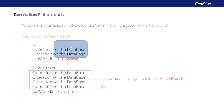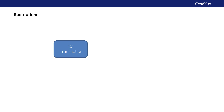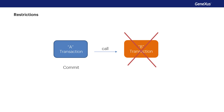Now let's look at some important restrictions in relation to this issue. In web environments, each transaction can only commit its own set of operations performed on the database and the procedures invoked by it, but not the operations performed by another transaction. That is, if a transaction calls another transaction, the commit executed by one transaction does not apply to the records inserted, modified, or deleted by the other. Therefore, two different transactions cannot be included in the same LUW.